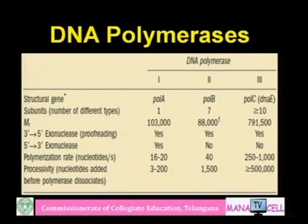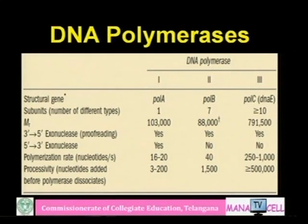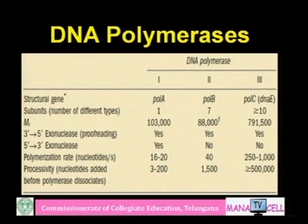The 5' to 3' exonuclease activity is shown only by DNA polymerase 1. This is why DNA polymerase 1 is involved in removing primers. Since a primer is a small stretch of RNA, RNA molecules should not remain in the DNA. This 5' to 3' exonuclease activity is also called RNase H activity or nick translation.